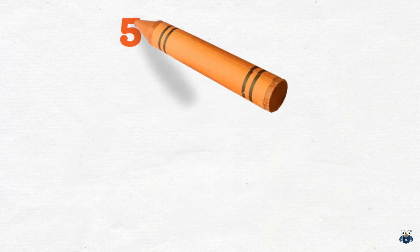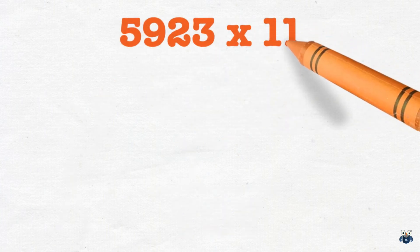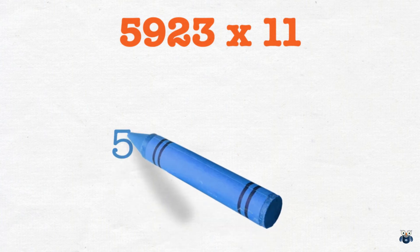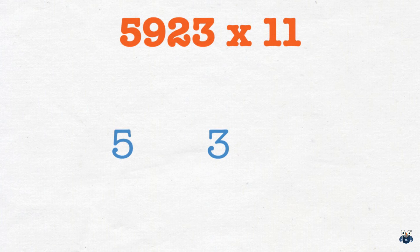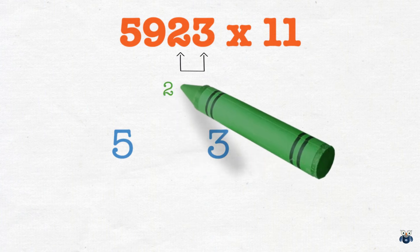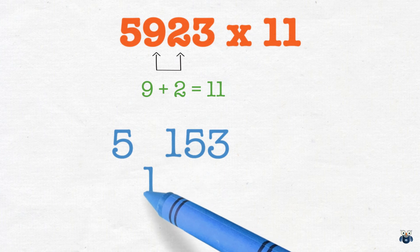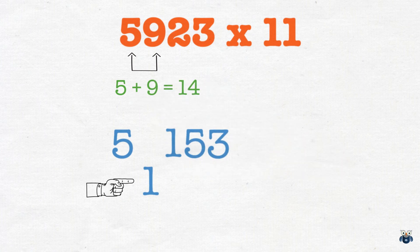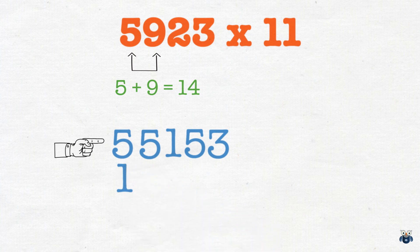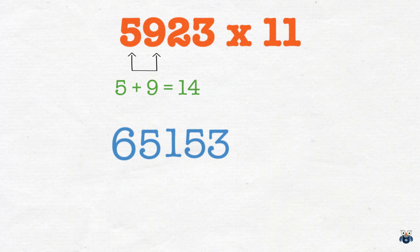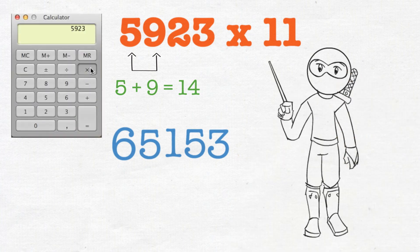Let's raise the bar on this next problem. What is 5923 times 11? We first write down the first and last digit, then pair digits and add starting from the right. 2 plus 3 is equal to 5 — let's write that down. 9 plus 2 is equal to 11: we bring down a 1 and carry over the other 1. 5 plus 9 is equal to 14; adding the carried over 1 we get 15, so we bring down the 5 and carry over the 1. Finally, we change the 5 to a 6 because of the carried over 1. This leaves us with 65153. Let's check our result — correct once again.